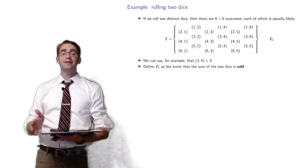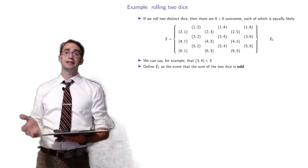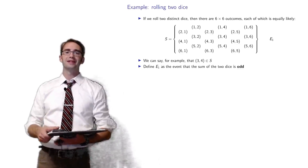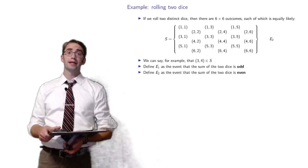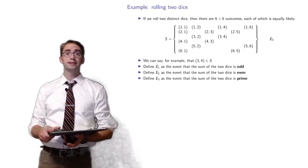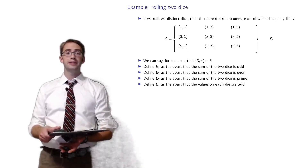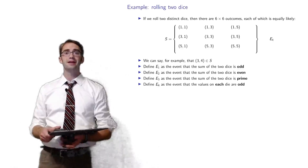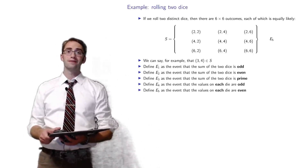Let E1 be the event that the sum of the dice is odd — not surprisingly, it's half of them, 18 outcomes, with three in every row and column. E2 is the event that the sum is even — just all the other outcomes. E3 is the event that the sum is prime. E4 is the event that the values on each die are odd — nine possibilities. E5 is the event that the values on each die are even.